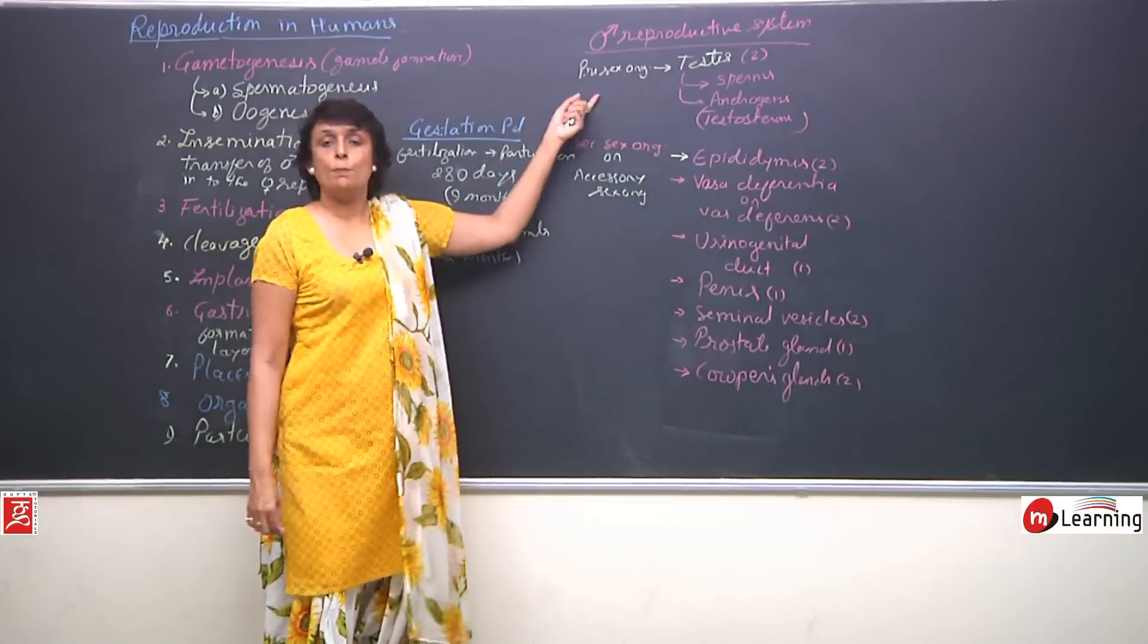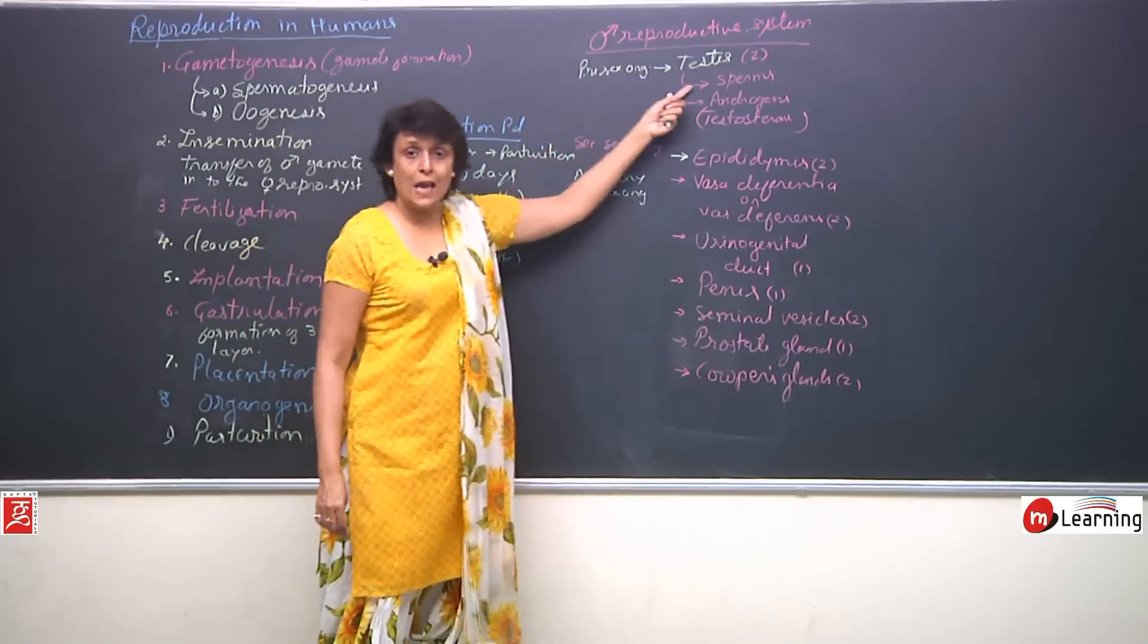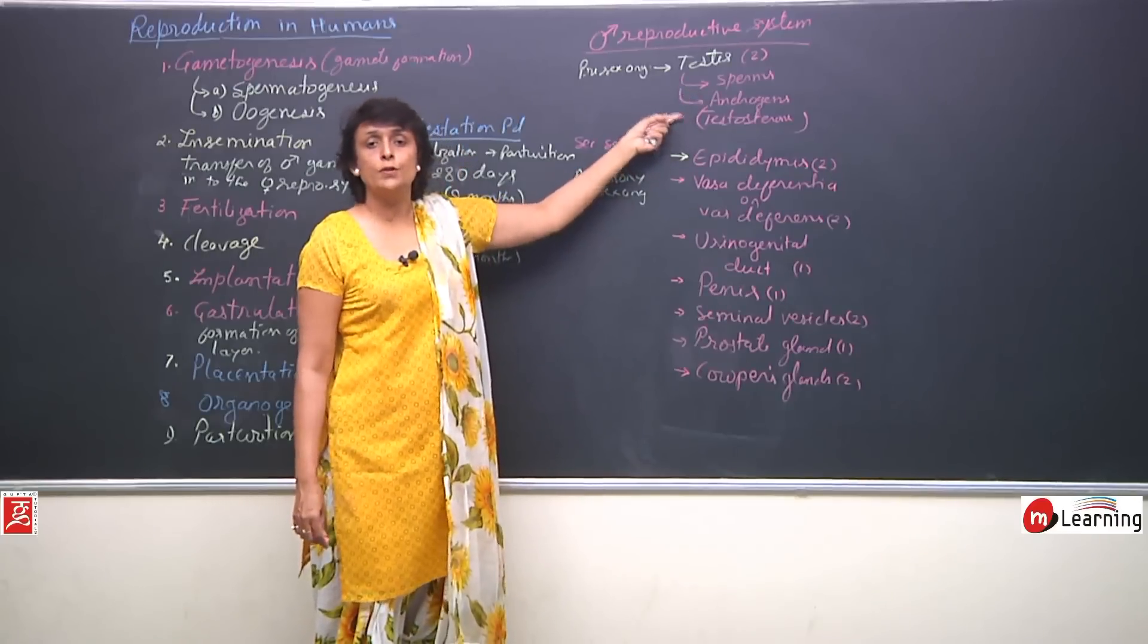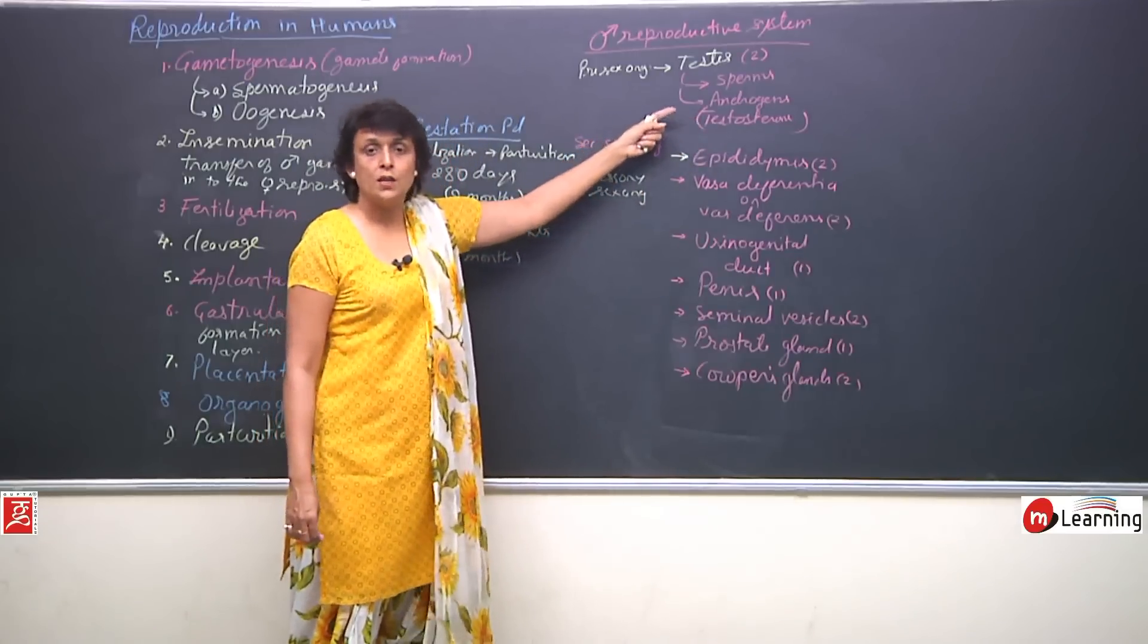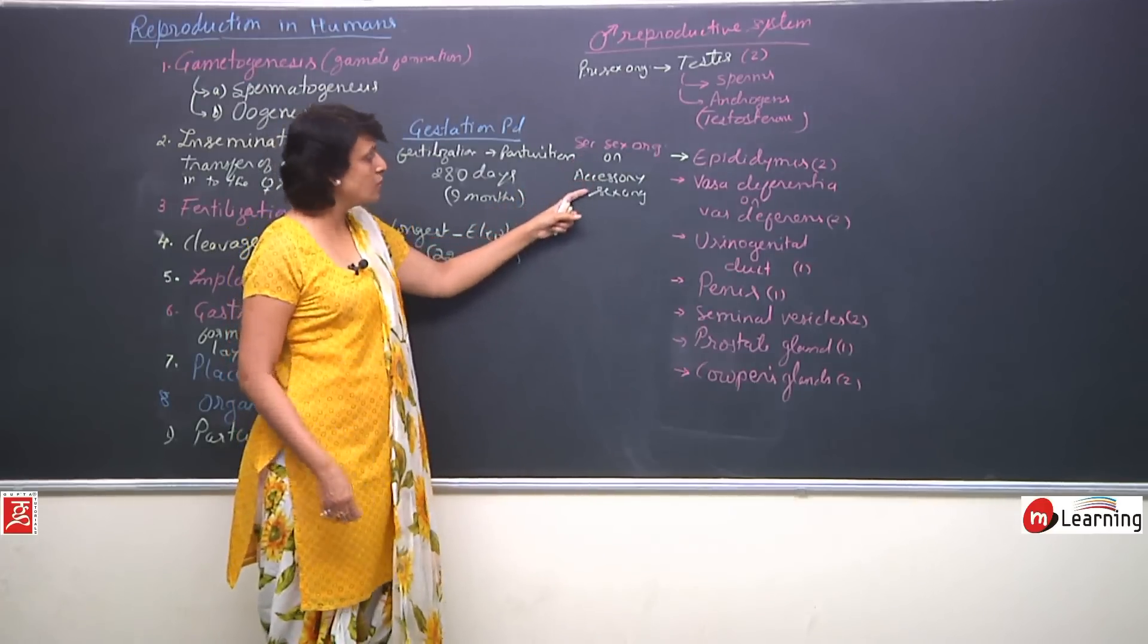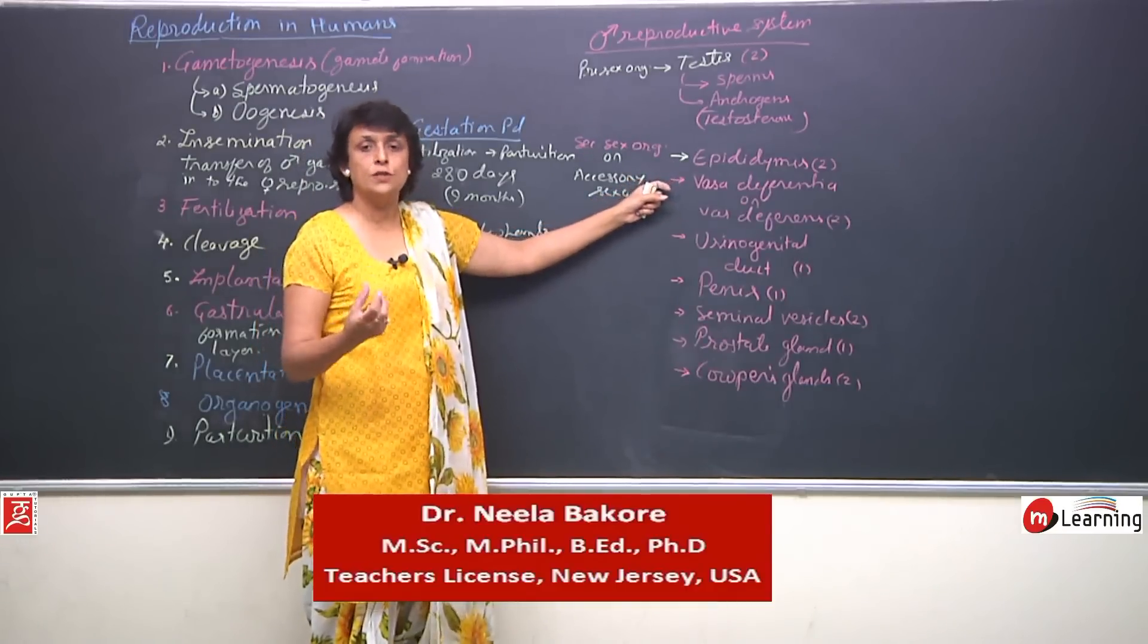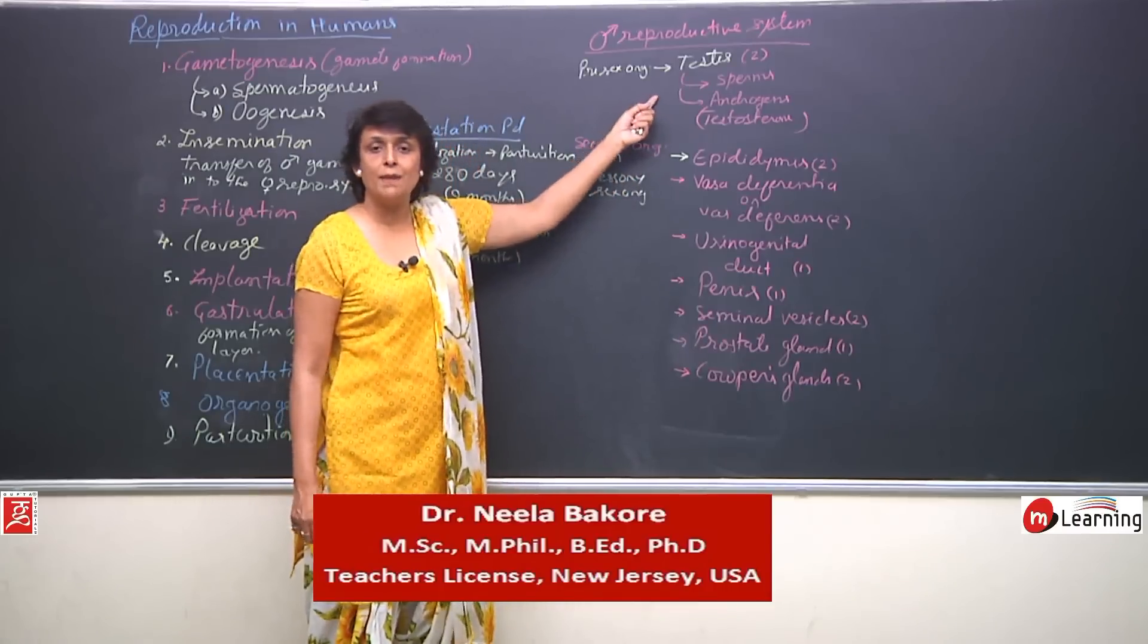So, main or primary sex organ testis, 2 functions performed by this, gamete formation. So, if it is a male reproductive system the organ is going to be a pair of testis and the gamete is sperm plus they also produce the hormone, the male sex hormone androgens. The most important androgen is testosterone. Then there are some helping organs, secondary sex organs or accessory organs. Most of these are ducts which are acting as passage or epididymis where some changes will take place in the sperms and all other structures glands helping but main function is done by testis.